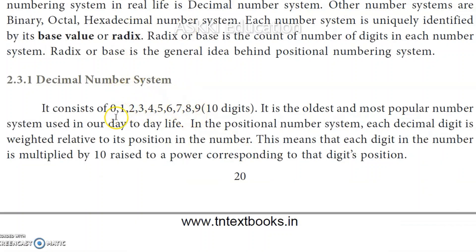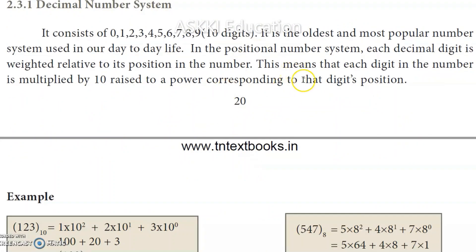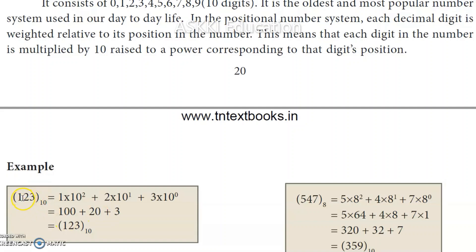In the decimal number system, there are 10 digits (0–9) and each digit in a number is multiplied by 10 raised to the power corresponding to its position. Positions start from 0 on the right side. For example, for the number 123: 3 × 10^0 + 2 × 10^1 + 1 × 10^2 = 3 + 20 + 100 = 123.